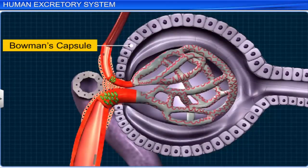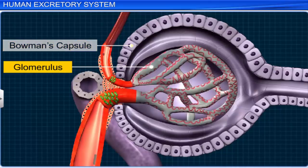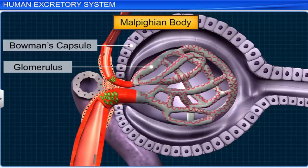The Bowman's capsule is a double-walled funnel-shaped structure that encloses the glomerulus. It collects the glomerular filtrate. The Bowman's capsule together with the glomerulus is called the Malpighian body, or renal corpuscle.